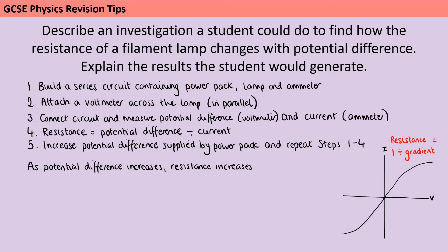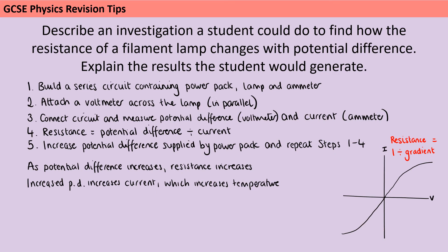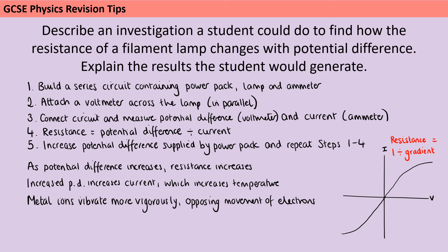The question says 'explain', and explain should trigger the word 'why' in your head. Why is this happening? The answer is that as we increase potential difference, that increases current — if we give the electrons more energy, they move more quickly. But in doing so, that also increases the temperature, just as in the national grid where fast-moving electrons produce heat loss. Because the temperature increases, the metal ions vibrate more vigorously, and that opposes the movement of electrons — and that's what we mean by resistance.